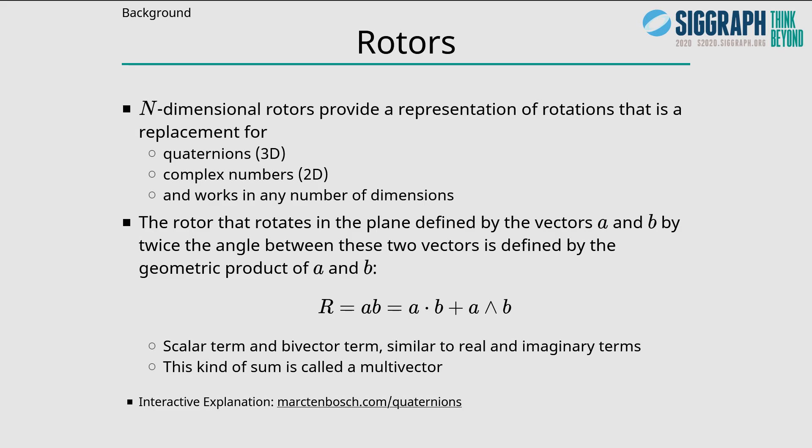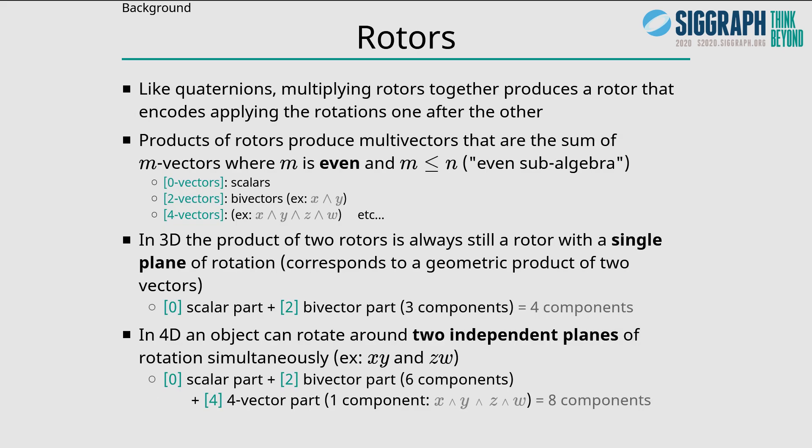N-dimensional rotors provide a representation of rotations that is a replacement for quaternions in 3D and complex numbers in 2D, but they work in any number of dimensions. A rotor that rotates in the plane defined by vectors a and b by twice the angle between these two vectors is defined by the geometric product of a and b. So r is the sum of a dot b, the traditional dot product, plus a exterior b. There is a scalar term and a bi-vector term, similar to the real and imaginary terms of a quaternion. This kind of sum is called a multi-vector. Like quaternions, multiplying rotors together produces a rotor that encodes applying the rotations one after the other. Products of rotors produce multi-vectors that are the sum of m vectors, where m is even: a 0-vector, 2-vector, 4-vector, etc.